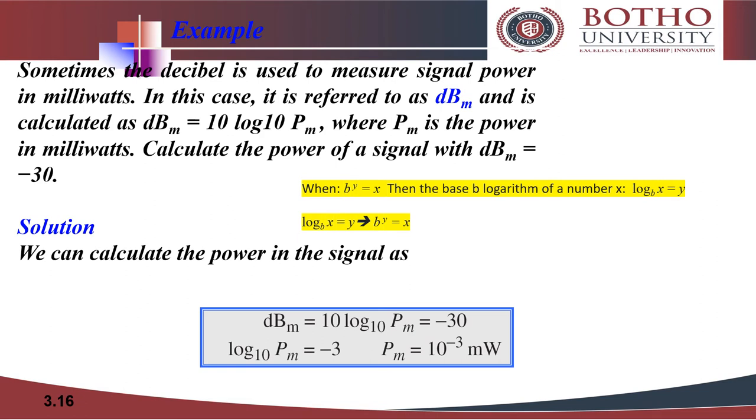Please note the highlighted expression: when b raised to the power y equals x, then the base b logarithm of a number x is log x to the base b equals y, which could also be written as b raised to the power y equals x. So we are going to use this when we calculate 10 log Pm to the base 10 equals negative 30. So when you do the cancellation, it will be getting the value 10 raised to the power minus 3 milliwatts.